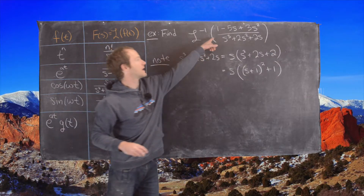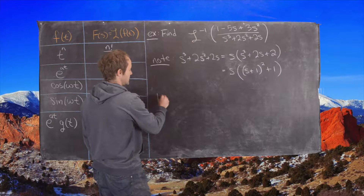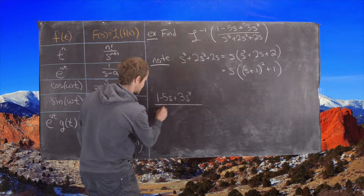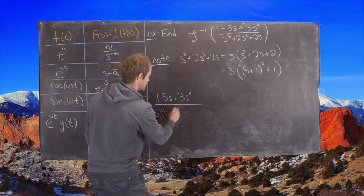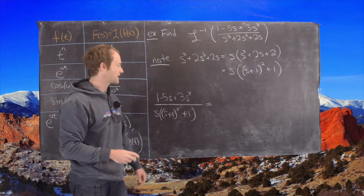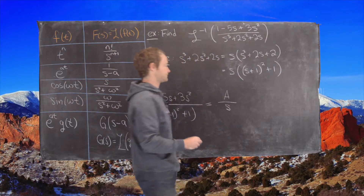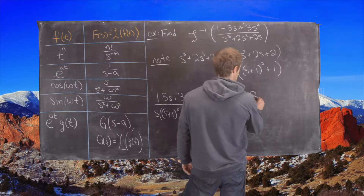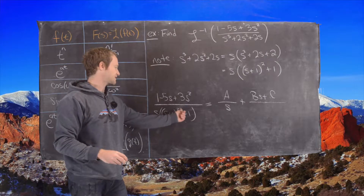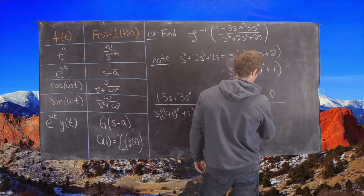We'll rewrite this rational function with this as the denominator: 1 minus 5s plus 3s squared all over s times the quantity s plus 1 squared plus 1. Now we want to break this apart into two pieces — one of which is A over s, and the next one will be Bs plus C all over s plus 1 squared plus 1.